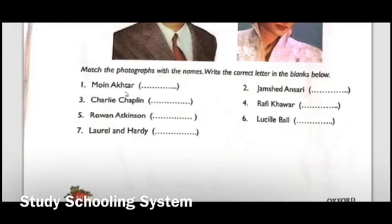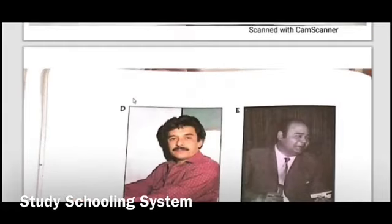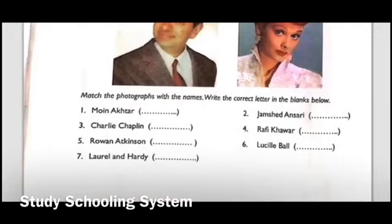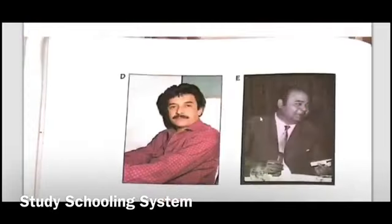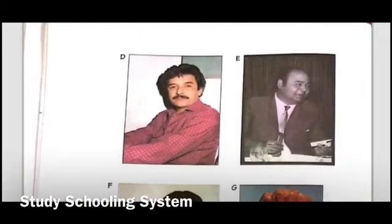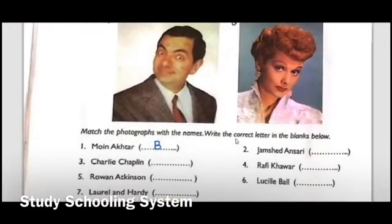Which picture is Moeen Akhtar? Yes, that's right — alphabet B is Moeen Akhtar. Let's fill out alphabet B in the blank. Number 2: Jamshed Ansari. Let's look for Jamshed Ansari. Yes, that's right — alphabet D. Let's fill out alphabet D over here.